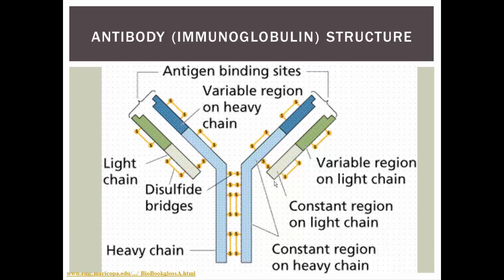The constant region is just that — constant. For any class of antibodies, the constant region is exactly the same. It's the variable region that varies by its binding site with the pathogen it's programmed to bind with. The variable region will vary depending on which pathogen this antibody is supposed to attack — one variable region for staph bacteria, another for E. coli, a third for strep. It's these antigen binding sites that vary and allow binding to only one particular epitope or antigen.